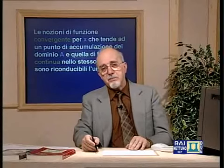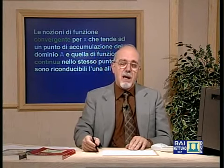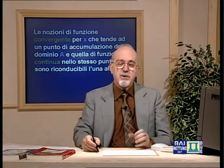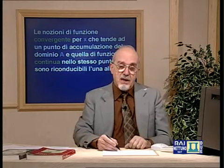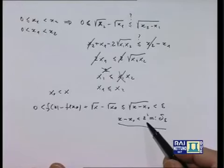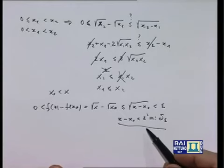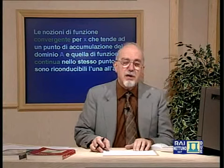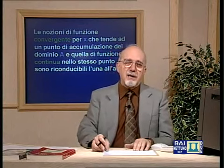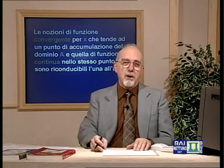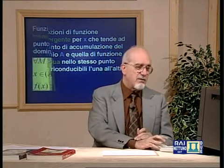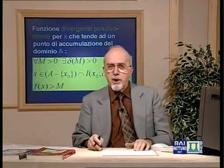Vorrei porre in guardia chi mi ascolta dal pensare che ε² sia sempre maggiore di epsilon: non è così. Se epsilon=1, epsilon²=1; se epsilon>1, epsilon²>epsilon; ma se epsilon è compreso tra 0 e 1 — per esempio epsilon = 10⁻³ — allora epsilon² = 10⁻⁶, un milionesimo, cioè mille volte più piccolo di epsilon. Abbiamo dunque verificato la continuità della funzione √x in ogni punto del proprio insieme di definizione.